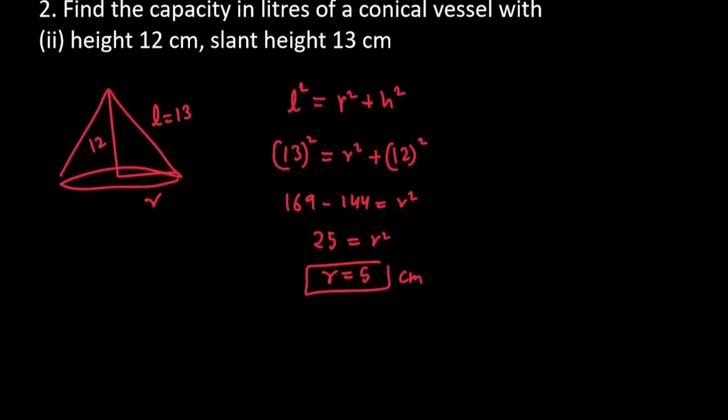R aa gaya aap ke paas. Ab hamein kya nikalna hai? Volume. Volume kaise nikaalenge? 1 by 3, πr²H. 1 by 3 as it is, π ki value 22 by 7. R² is 5 ka square into height. Height kitni aap ke paas?